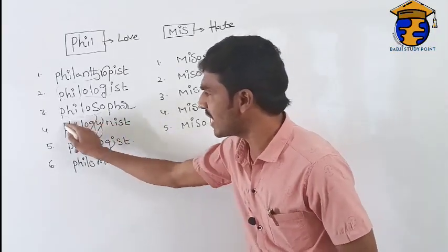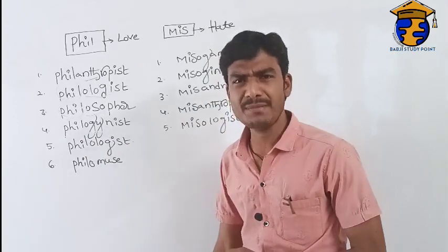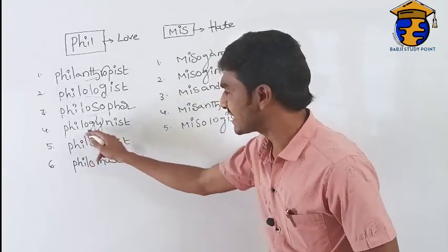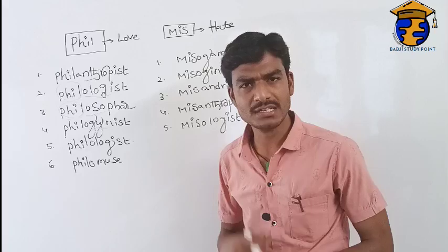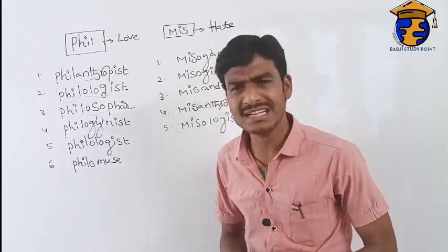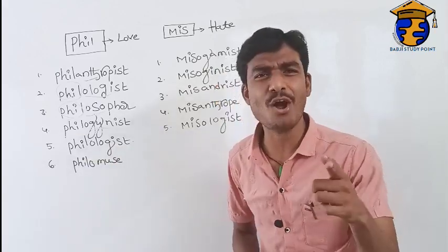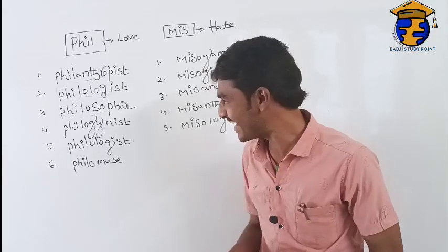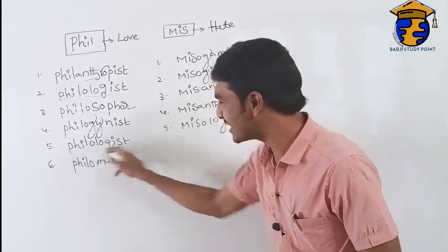The next word is 'philogynist.' The prefix 'phil' means love, and 'gyne' means women. A lover of women is called a philogynist.